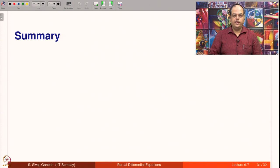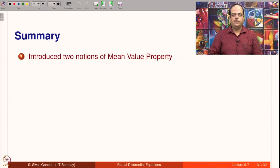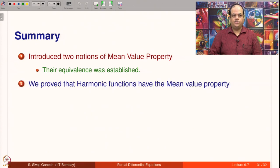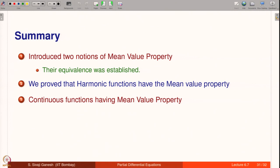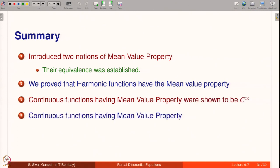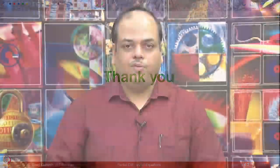To summarize today's lecture: we introduced 2 notions of mean value property and established their equivalence. We proved that harmonic functions have the mean value property. We proved that continuous functions having mean value property are C-infinity, and that continuous functions having mean value property are in fact harmonic functions. Thank you.